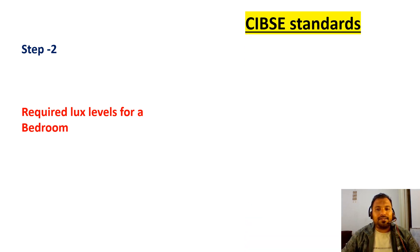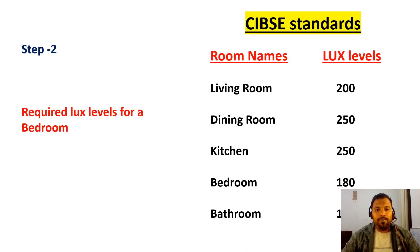Step 2 is to find the required lux level for a particular room. This is very easy - there are standards called CPSI standards and international lighting standards. For residential buildings: living room requires 200 lux, dining 250, kitchen 250, bedroom 180, and bathroom 150. For our example, the bedroom requires 180 lux. Step 2 is also simple and finished.